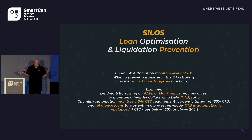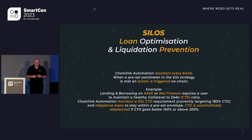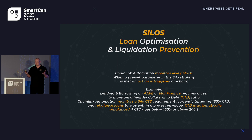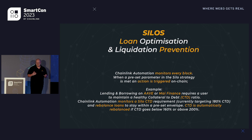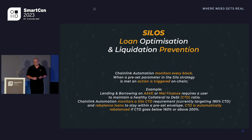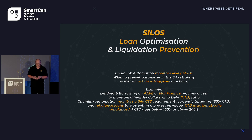This is where we talk more about silos — loan optimization and liquidation prevention. Chainlink Automation monitors every block, which is actually quite hard to do, and the fact that it's on a decentralized network is really beneficial to us. This would have taken six-plus months to build ourselves, and it wouldn't have been decentralized. The complexities of automation make it so much easier for us to deliver this to the end user.